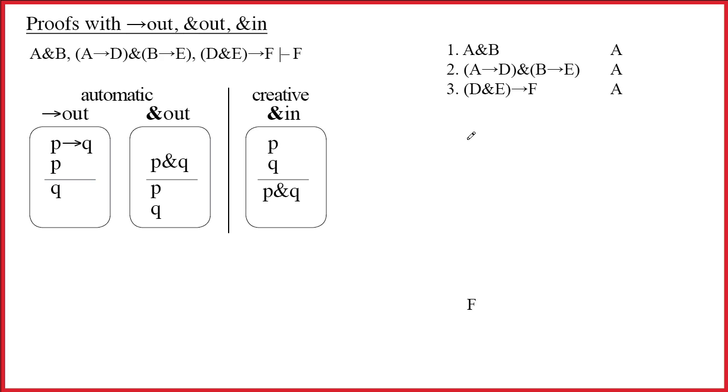And we jump in and we start. Well, what's your first thought whenever you look at a line? What's the main connective? And we see it's an ampersand. Well, the ampersand out rule, we know, tells us break up the line into two pieces. Because A is true and B is true. Well, let's put them on separate lines.